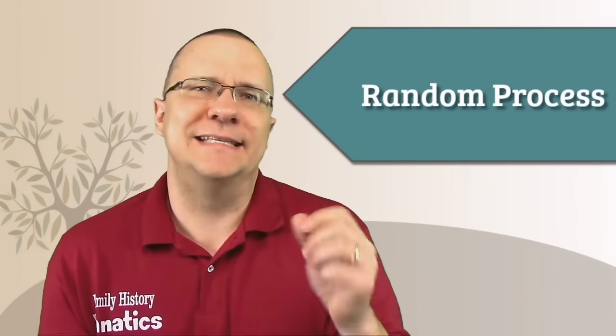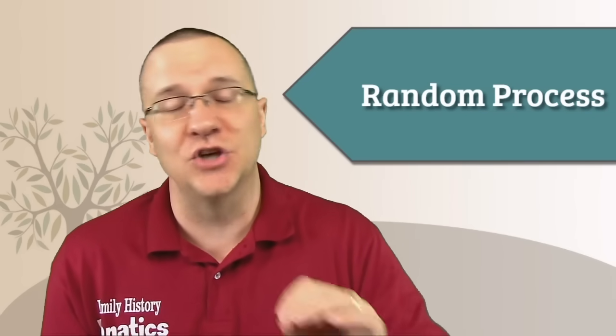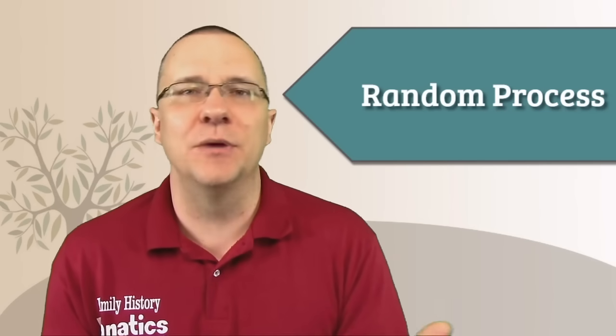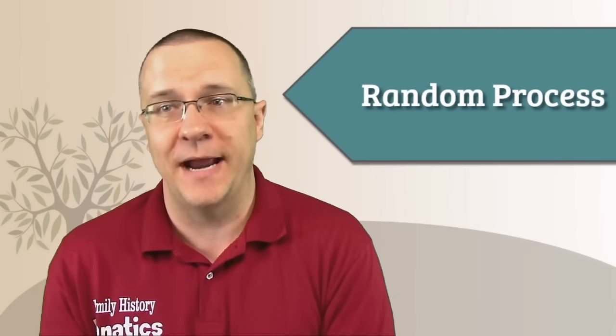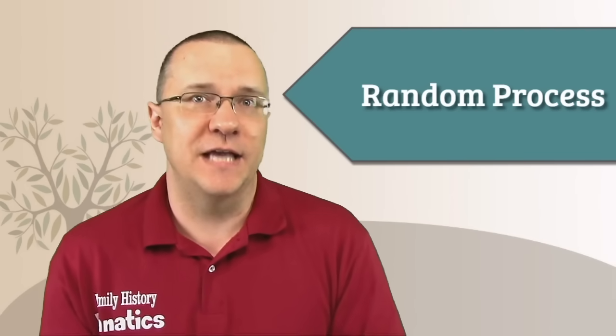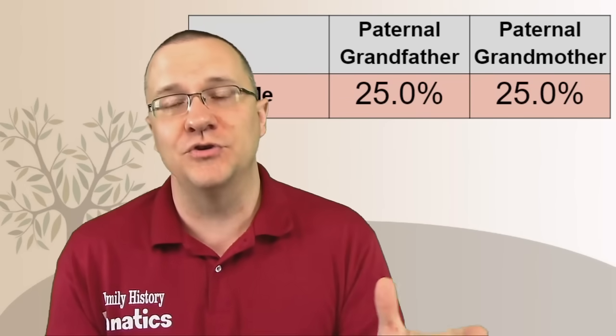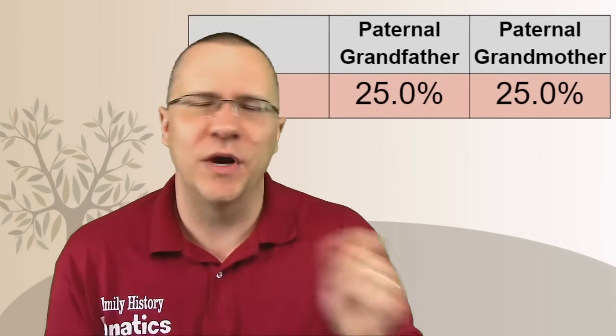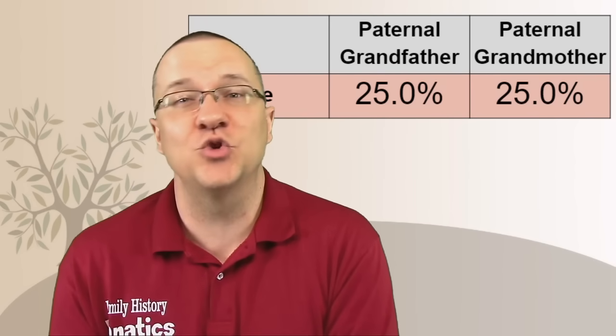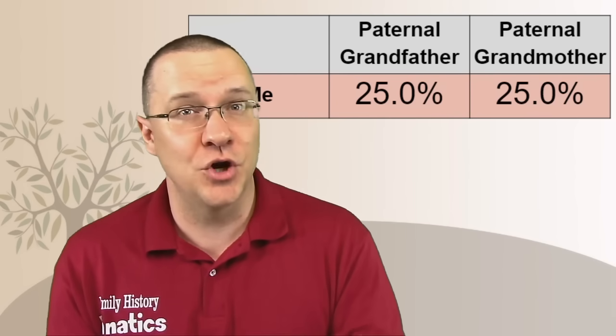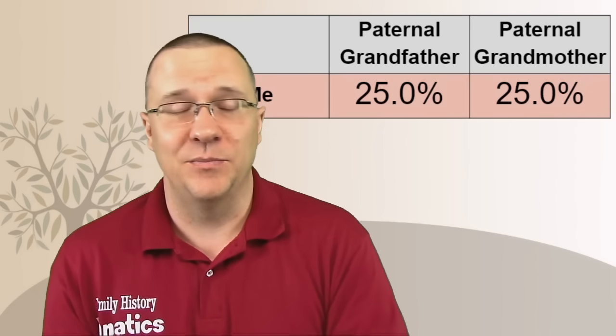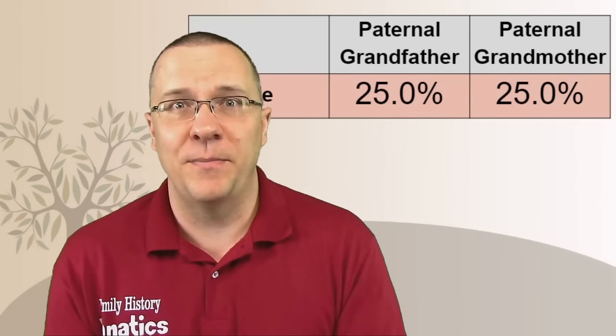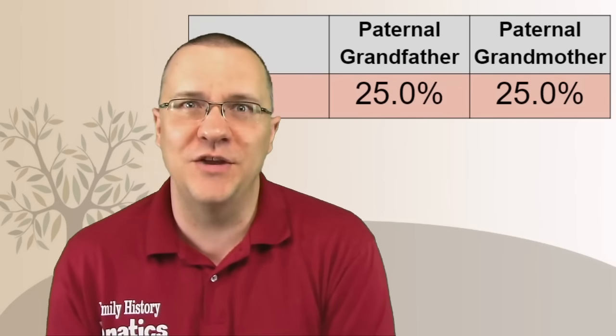One of the important things to remember is this is a random process. So you are not going to be able to predict which one it is until you actually compare yourself with your grandparents. Now if I take my full set of chromosomes and compare it to both my paternal grandfather and my paternal grandmother, I got 25% from my paternal grandfather and 25% from my paternal grandmother. I said at the beginning that it's not always the case, but this looks like it's perfect. I got 50% from my parents, I got 25% from each one of my grandparents.